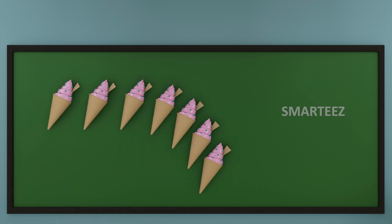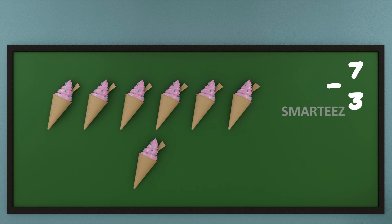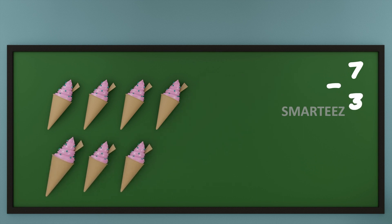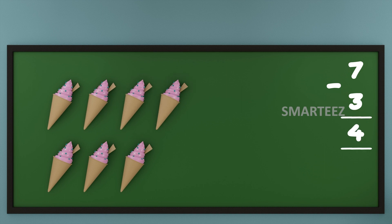Now let's see what happens when we have a total of seven ice creams and we subtract three ice creams from it. Take a look. That's seven ice creams in total. Let's subtract three ice creams out of it. That's one, two, and three ice creams. What we have left is one, two, three, and four ice creams. I know you're already thinking about the ice creams.